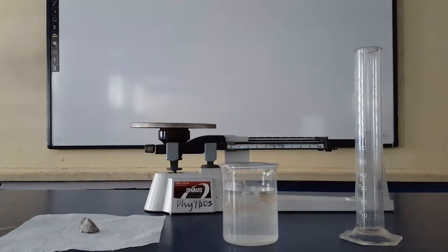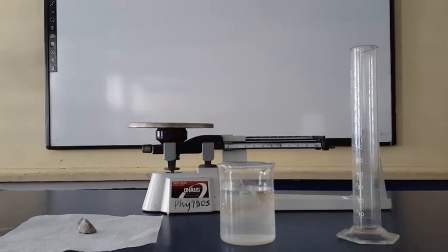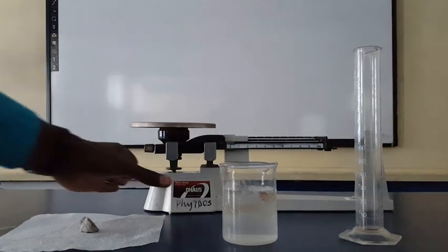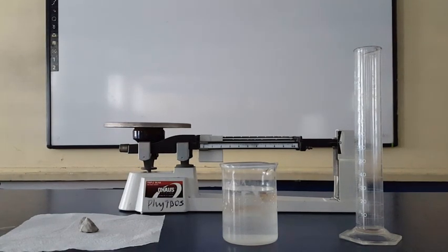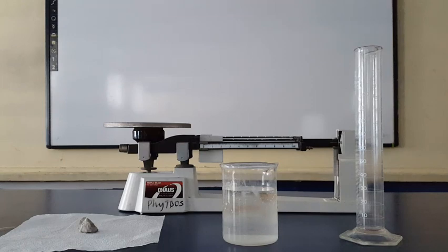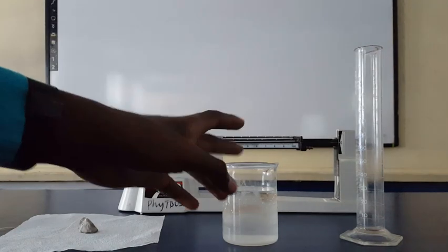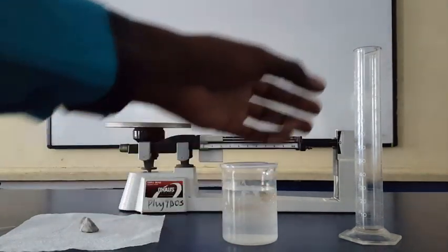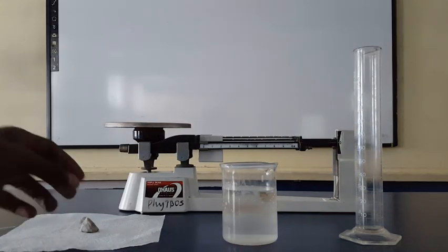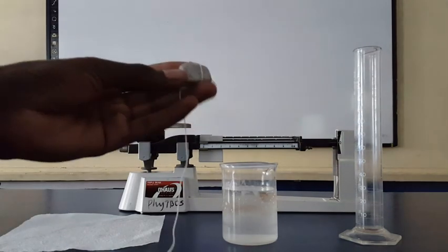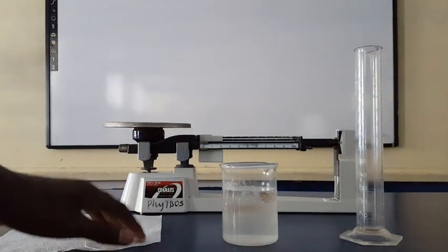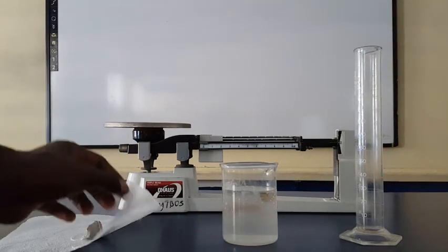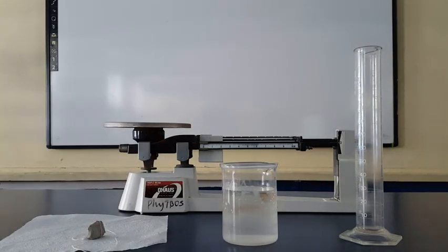This is Junior Roberts coming to you with realjuniorroberts.com. In this video, I'll be demonstrating how to find the density of an irregular shaped object using these apparatus here. I'll be using a beaker with some water, a measuring cylinder, a stone tied to a string representing my irregular shaped object, a piece of napkin for drying purposes, and a triple beam balance.